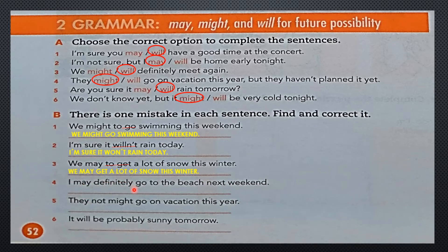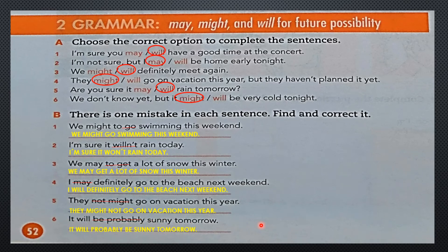Number four: I may definitely go to the beach next weekend. Do we use may with the word definitely? A moment ago I also indicated no. What word only works with definitely or probably? The word will. So what will be incorrect there? May. We change it and locate the correct word: I will definitely go to the beach next weekend. Number five: They not might go on vacation this year. In that case it says not might. And what is the correct answer? They might not go on vacation this year. What happened with the word probably? Same thing. We change it and place the correct answer: It will probably be sunny tomorrow.